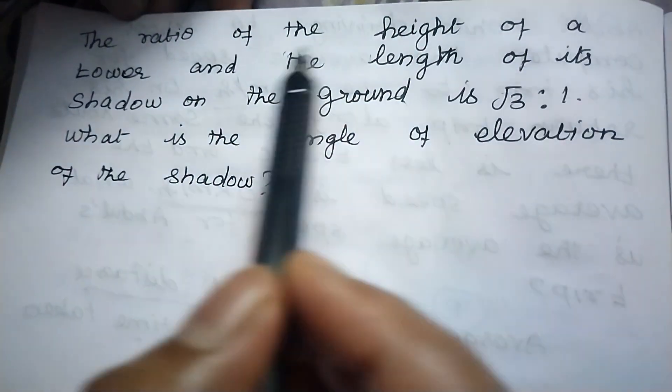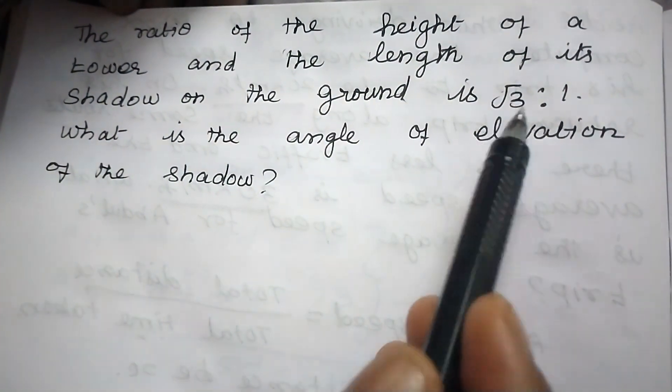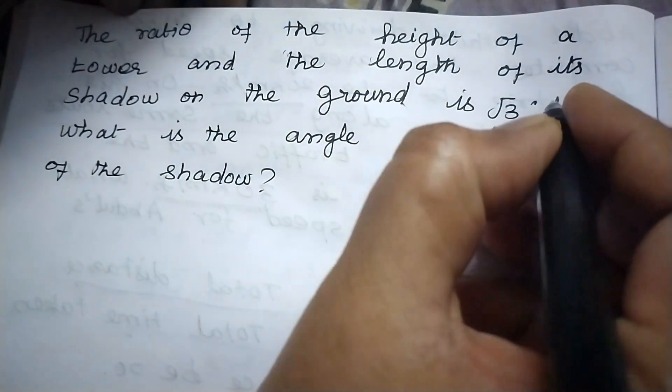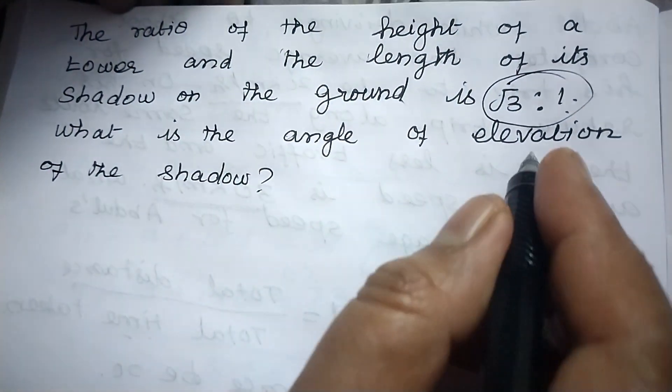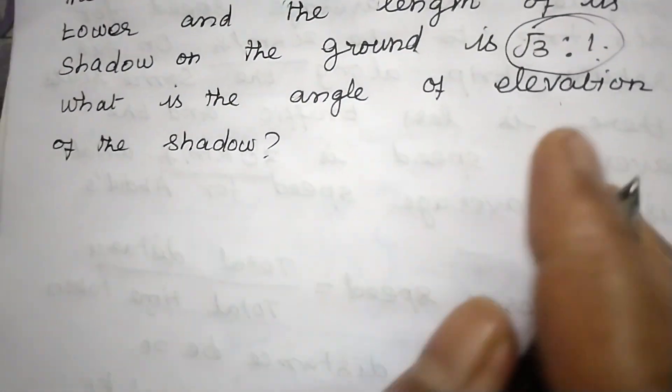The ratio of the height of a tower and the length of its shadow on the ground is √3 is to 1. So ratio alone it is given, √3 is to 1. What is the angle of elevation of the shadow?